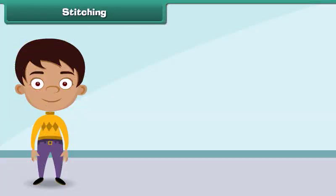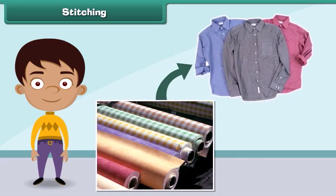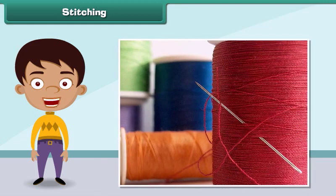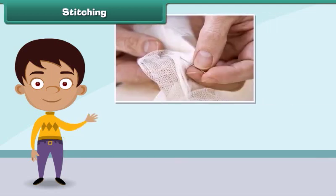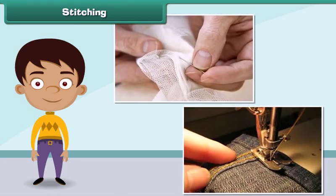Stitching is the process by which fabrics are converted into clothes. It involves sewing a fabric with needle and thread. In olden days stitching was done by hand, but nowadays stitching is done with machines.